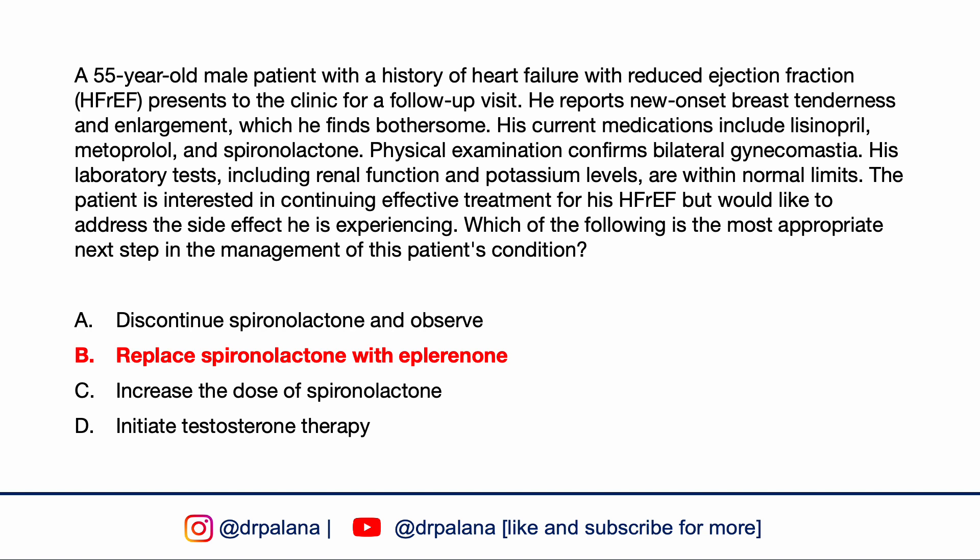The correct answer is to replace spironolactone with eplerenone. This patient is experiencing gynecomastia, a known side effect of spironolactone, which occurs due to spironolactone's additional action as an antagonist of androgen receptors, leading to an imbalance between androgen and estrogen activity. Eplerenone, another MRA, is a more selective antagonist of the mineralocorticoid receptor with much lower affinity for androgen and progesterone receptors, making it less likely to cause gynecomastia and an appropriate alternative.